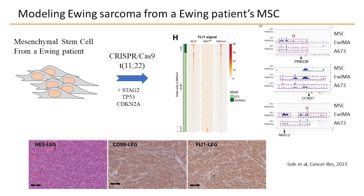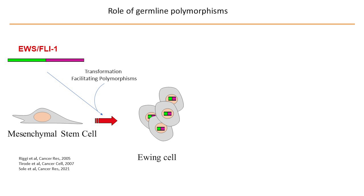The current model is that Ewing sarcoma arises from some kind of mesenchymal stem cells. Mesenchymal stem cells are still a somewhat fuzzy concept and probably something heterogeneous, so there is still precision needed on exactly what kind of mesenchymal stem cell is involved and at which stage. But the current model is that the cell of origin is a mesenchymal stem cell.